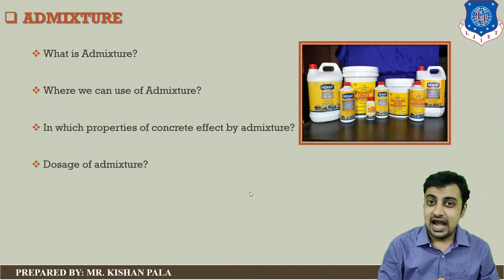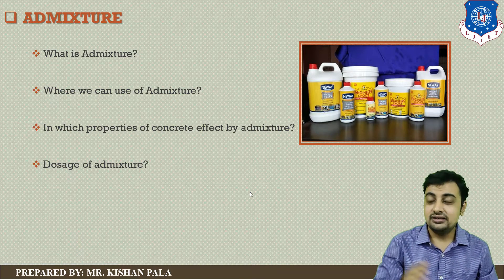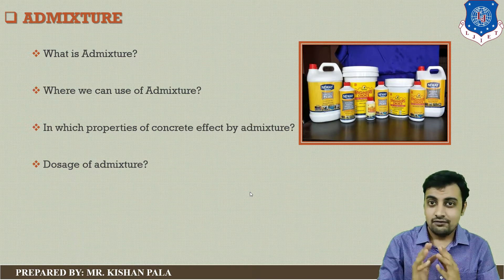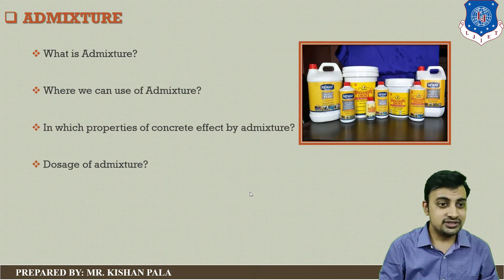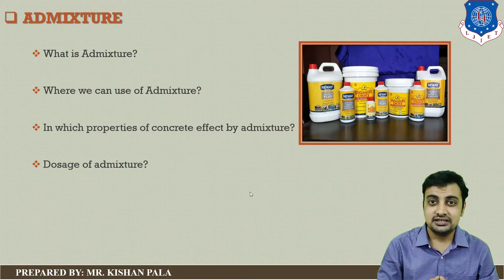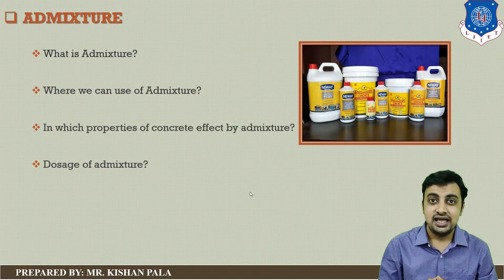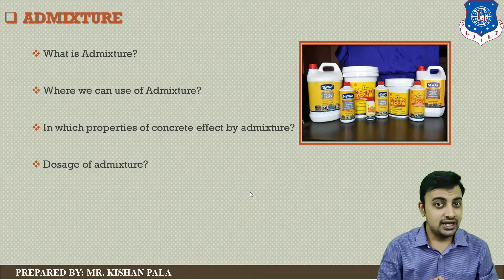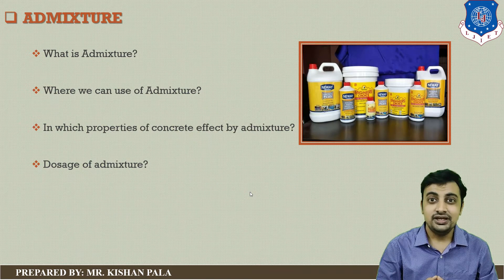What is admixture? Admixture is one of the ingredients of the concrete mass other than the basic ingredients like cement, water, fine aggregate, and coarse aggregate. Where can we use admixture? We can use admixture as accelerators, as retarders, as pozzolanic admixture, or as a waterproofing material. In these areas, you can utilize the admixtures while changing the basic property of the concrete.